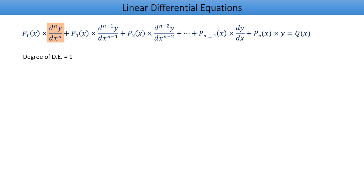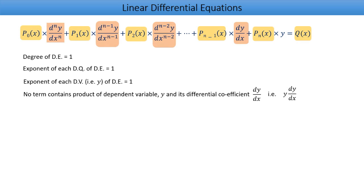First, the degree of the differential equation is equal to 1. Second, the exponent of each differential quotient, that is dy/dx, is equal to 1. Third, the exponent of each dependent variable is equal to 1—in this case, the dependent variable is y. Last, no term on the left-hand side contains a product of y and dy/dx.